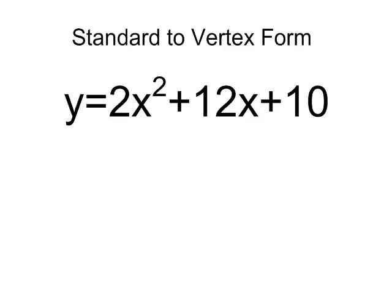We're going to be converting this standard form quadratic to vertex form. What we need to do is generate a perfect square trinomial and get around this issue of having a coefficient in front of the x squared term.